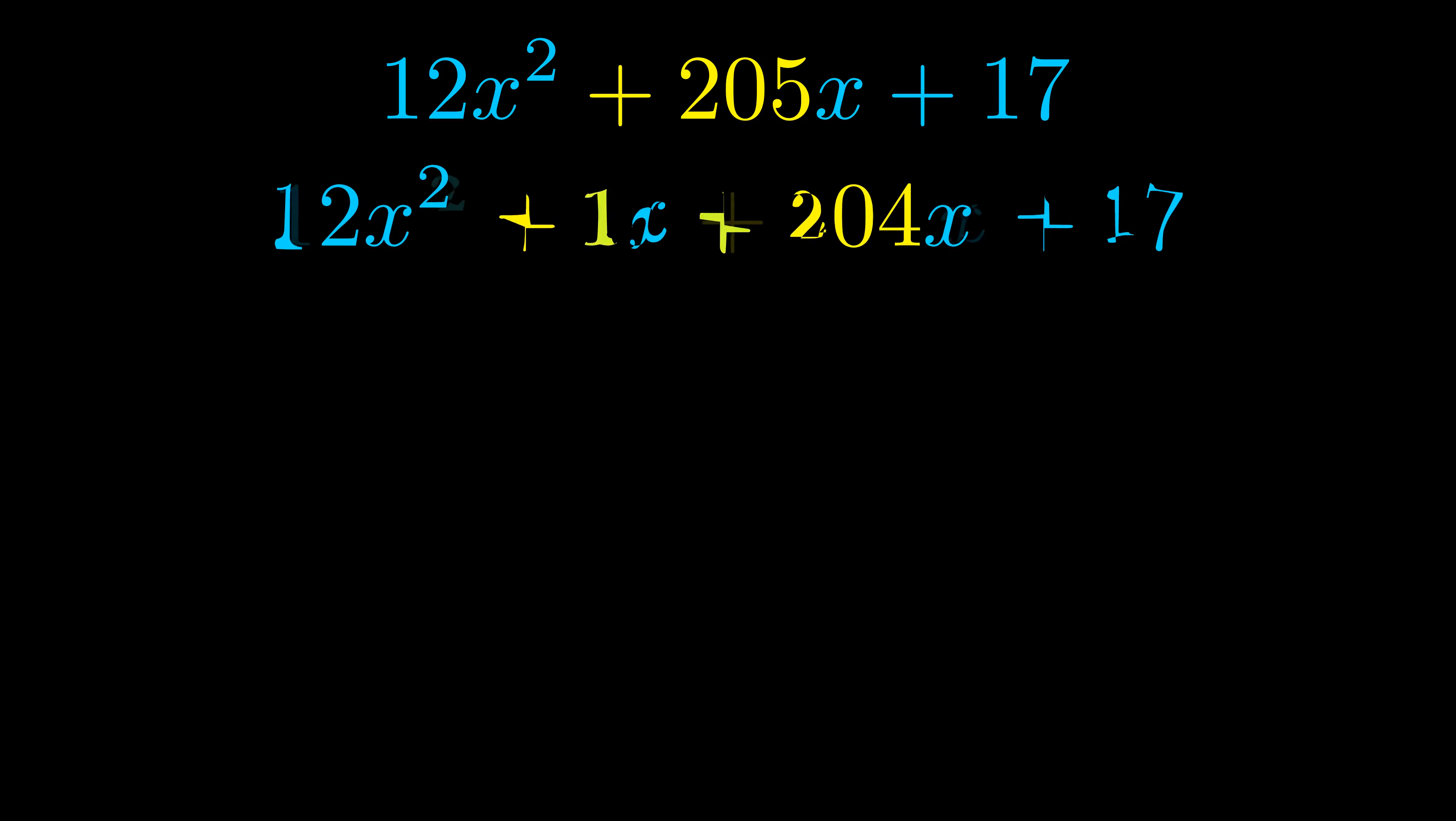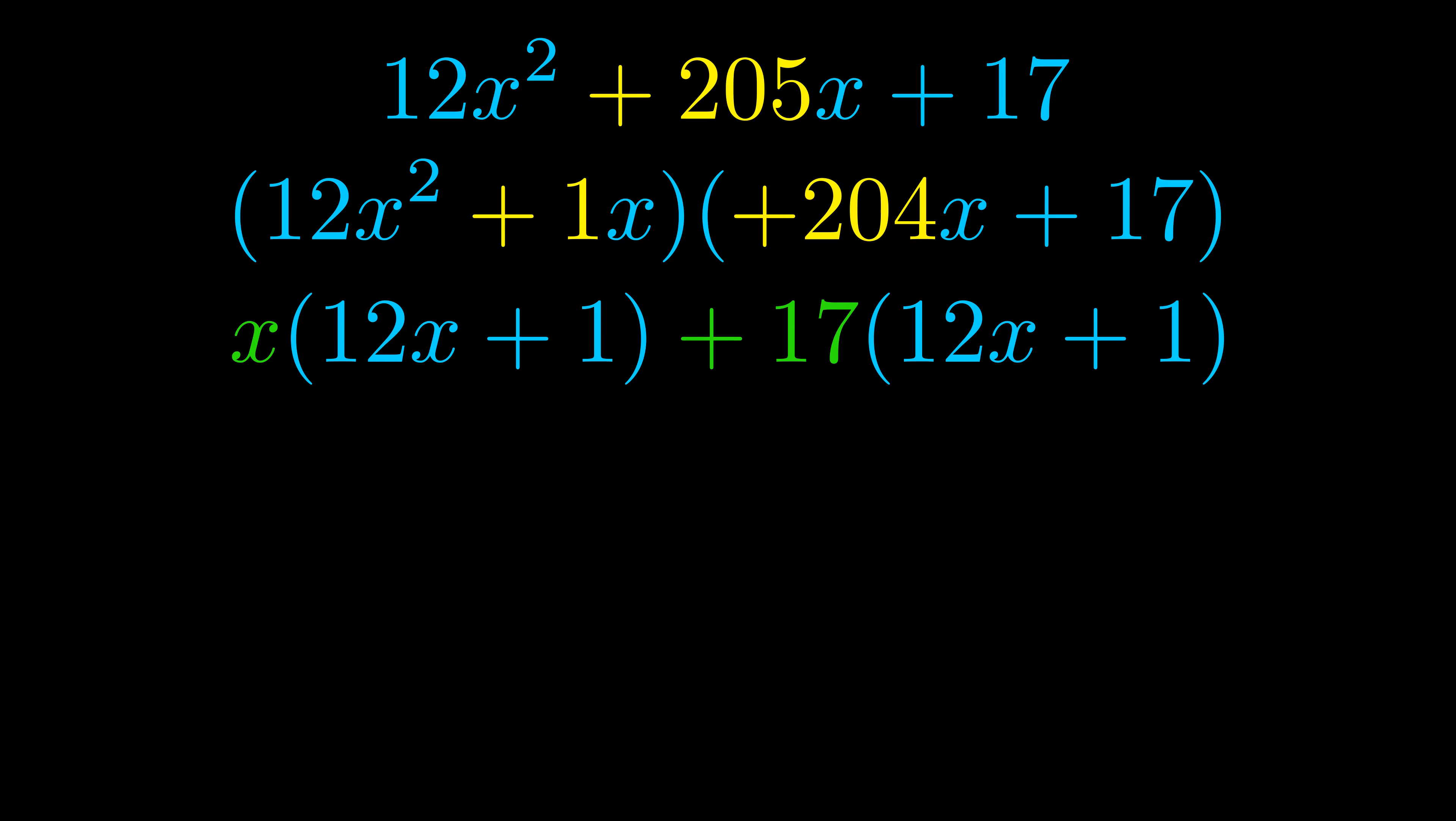Once we've done this we go ahead and we put parentheses around the first term and the last term and we do that so that we can take the greatest common factor out of both terms. We can see the greatest common factor is now outside in green. Notice also how what remains inside of the parentheses is the same in both cases. The blue values are the same.